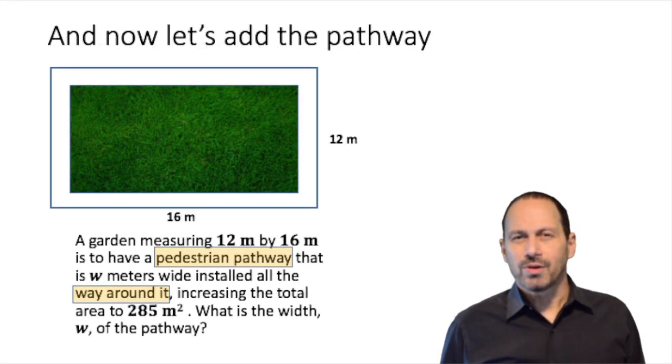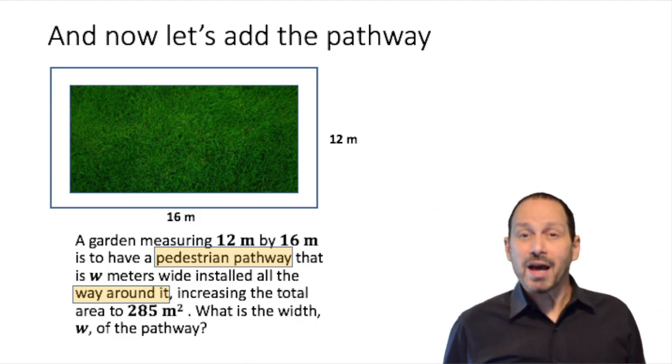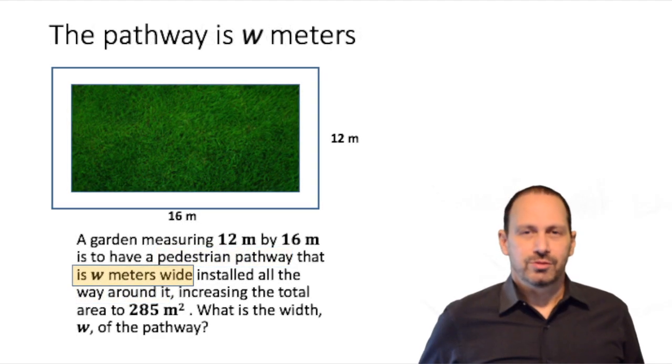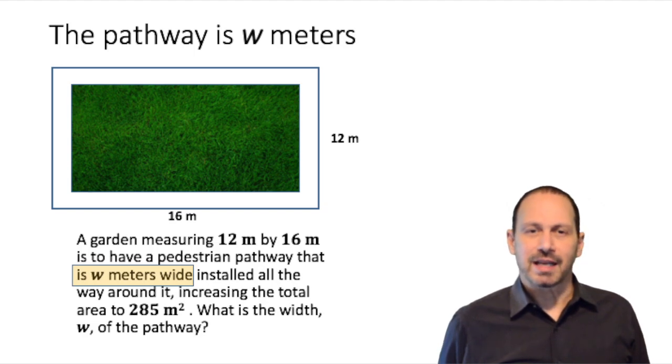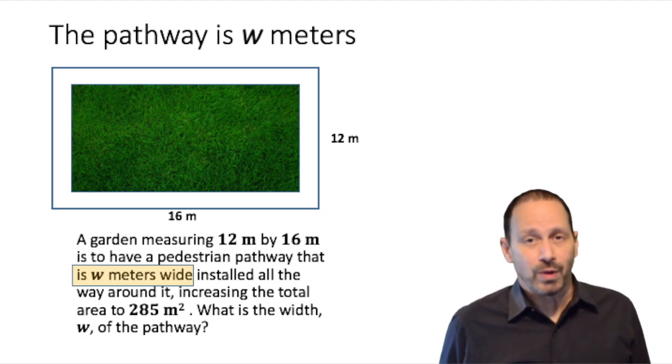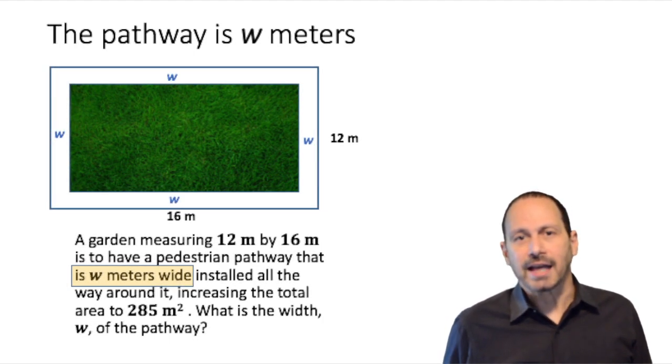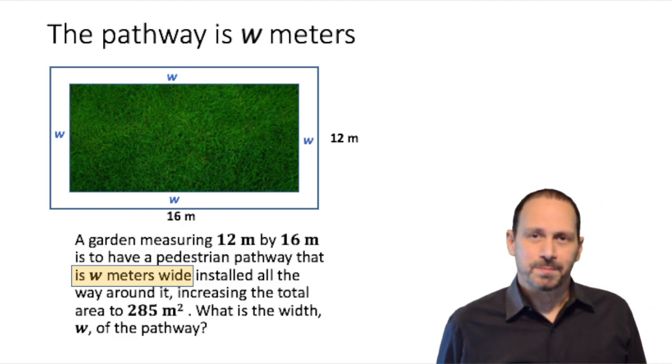And now let's add the pathway, the pathway that goes all the way around the garden. The word problem states that the pathway is W in width. So we can add W meter in width to the diagram, so it begins to look a lot more complete.